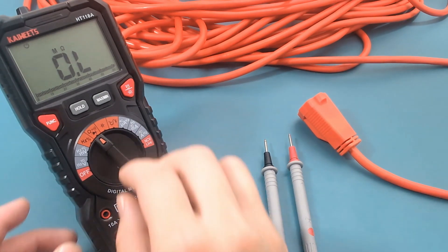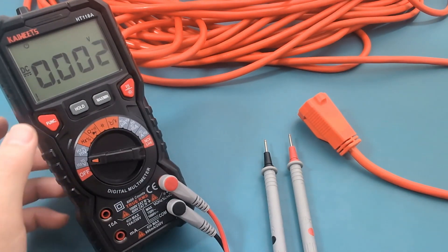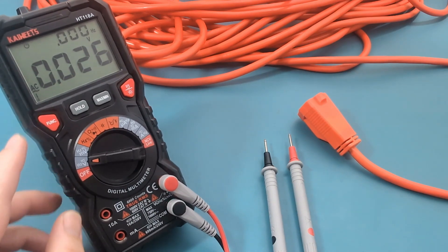Turn the dial to the voltage setting. Press the function button to toggle from DC to AC voltage.